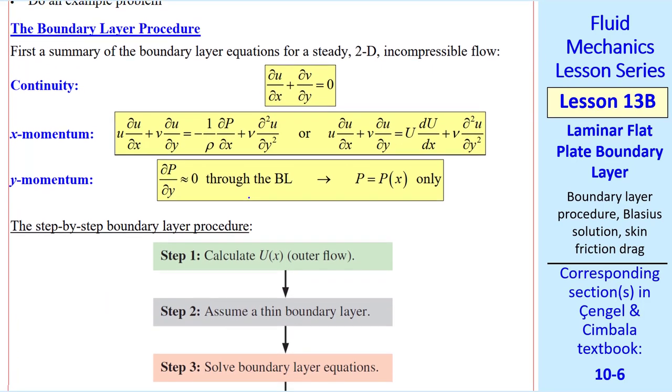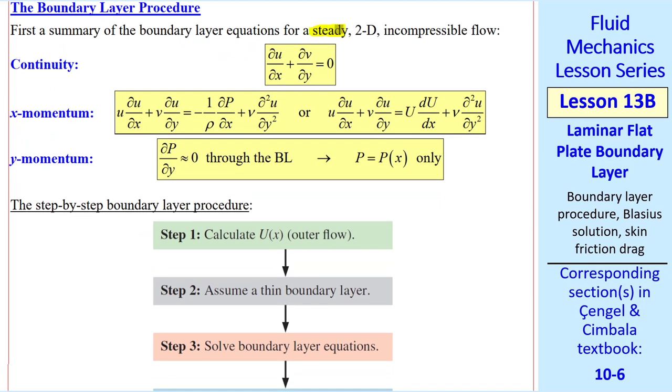First, here's a summary of the boundary layer equations. We restrict ourselves to steady, 2D, and incompressible flow, and our boundary layer equations reduce to these: continuity, x-momentum, and y-momentum.